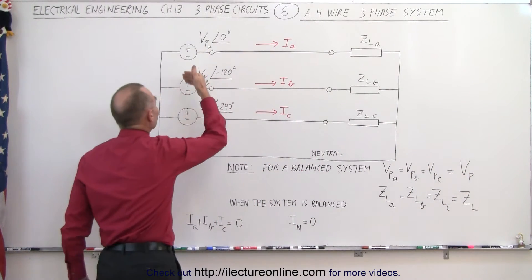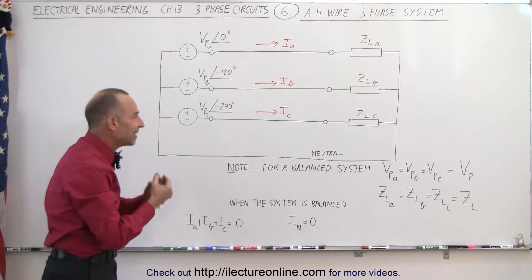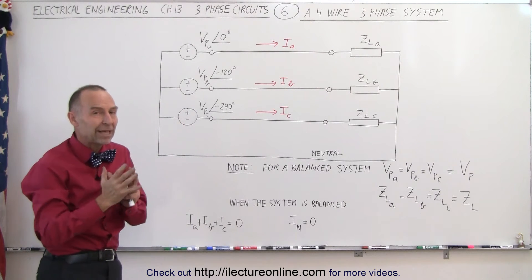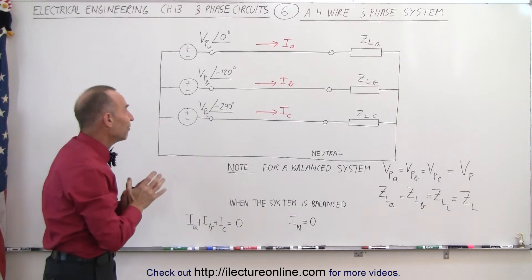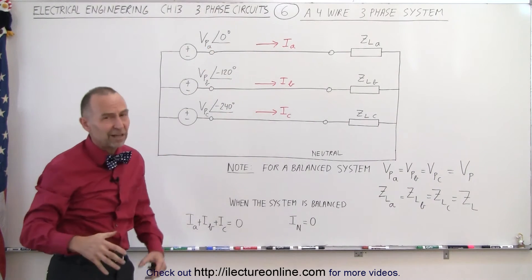understanding that the three separate sources for the three phases of voltage have the exact same magnitude. They're simply 120 degrees apart in phase, and it's very important that they are exactly 120 degrees out of phase.